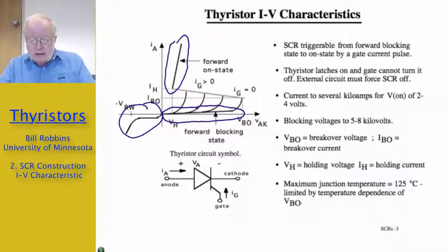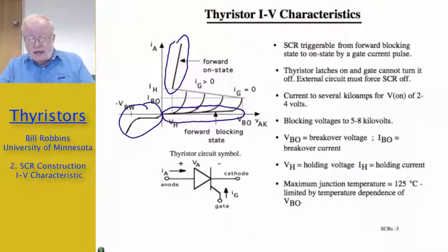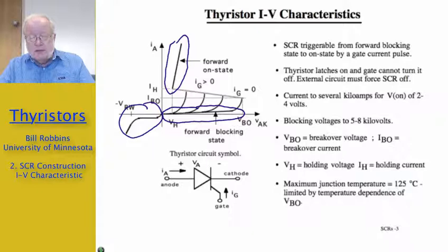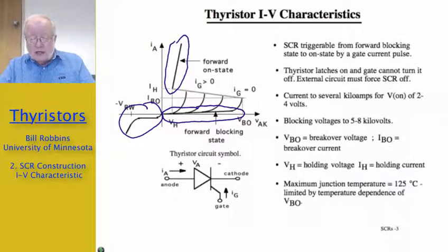The other parameters defined on the IV curve are fairly self-evident. VB0 is the so-called breakover voltage, which is the voltage at which the device is rated to withstand when off. Any applied voltages that exceed the breakover voltage may inadvertently trigger the device on. The breakover current is the current at which the device breaks over at the breakover voltage, typically a few tens to a few hundreds of milliamps. The holding voltage and holding current represent the minimum combination of voltages and currents the device has when still in the on state. If the voltage or current drop below those values, it will automatically switch from the on state to the blocking state. Holding voltages are typically on the order of a volt, and holding currents are typically only a little bit larger than the breakover current.